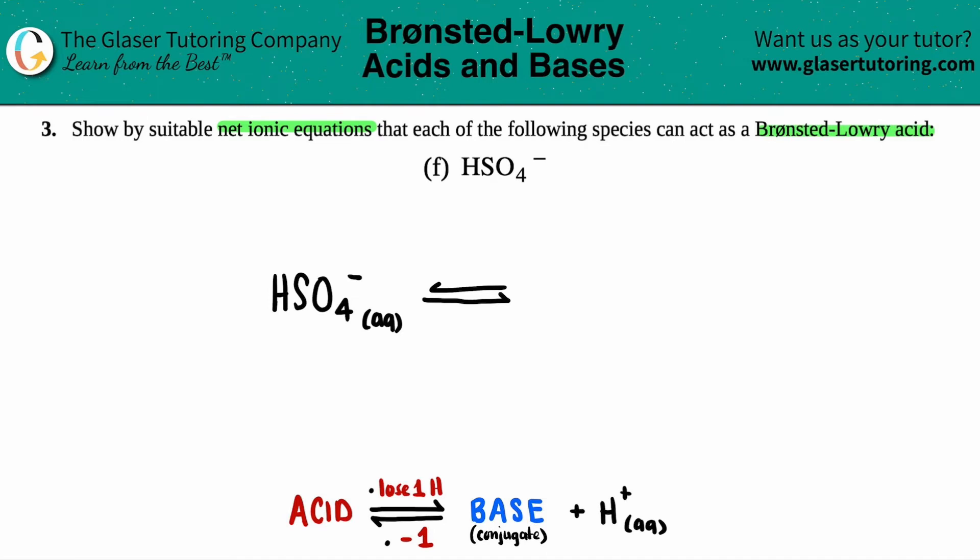All right. So now what happens? Well, the acid will always lose one hydrogen. It donates one hydrogen that it's got. Now, in HSO4's position, it only has one H. So this H, bye-bye, it's leaving.